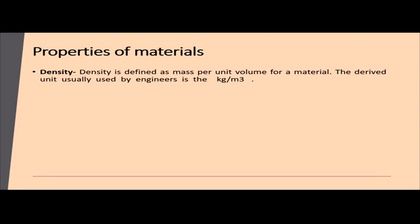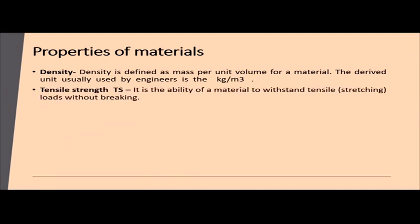First, we will look at density. Density is mass per unit volume and its unit is kg per meter cube, where kg is the unit of mass and meter cube or centimeter cube is the unit of volume.